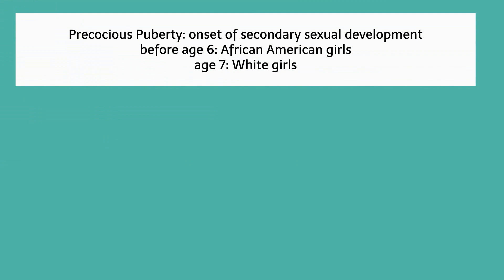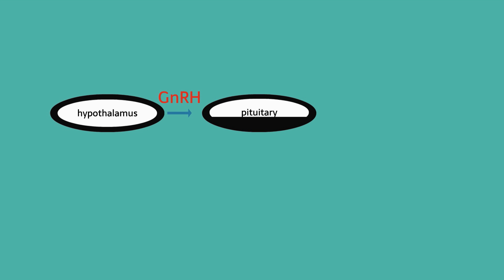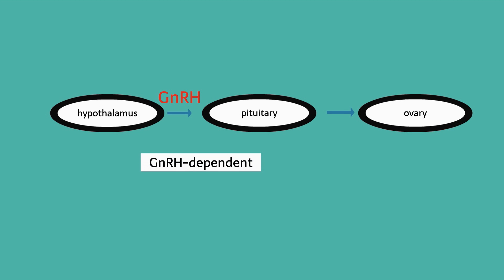Let's move now to precocious puberty. This is the onset of secondary sexual development prior to age six for African American girls and age seven for white girls. The HPO axis can be diagrammed as: hypothalamus secreting GnRH, stimulating the pituitary, which then stimulates the ovary to make sex hormones. There are GnRH-dependent and GnRH-independent causes of early sex hormone production.